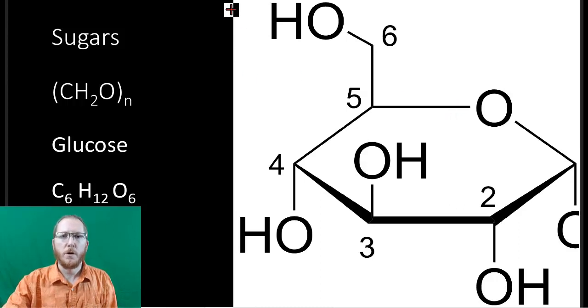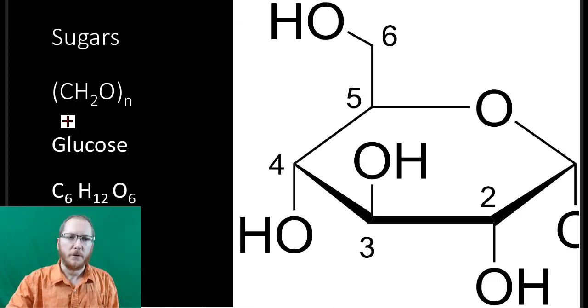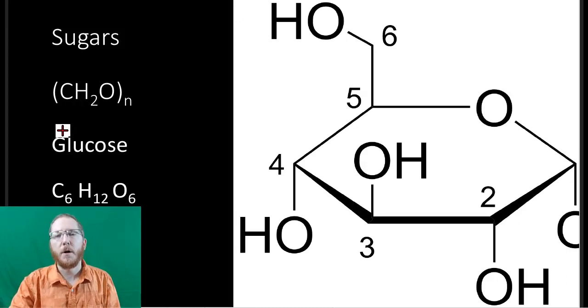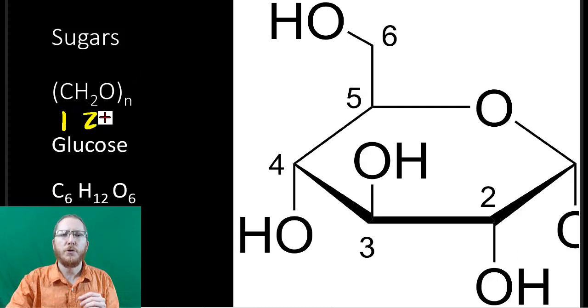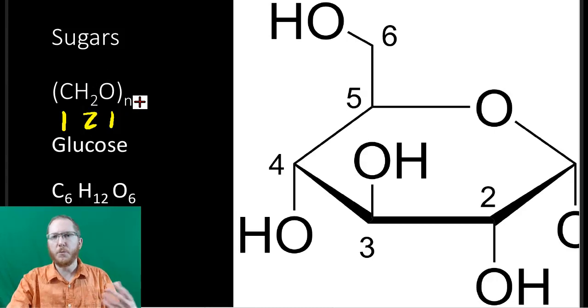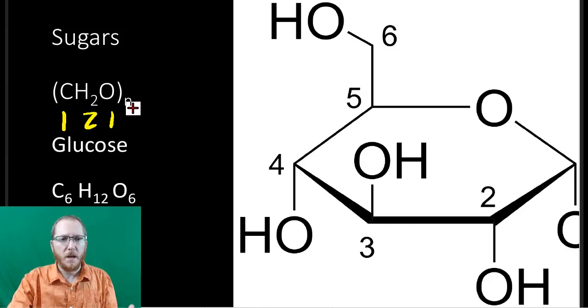This is going to show glucose off to the side here. Glucose is C6H12O6 as its chemical formula. You'll see that's kind of important because that's partly how we define carbohydrates. If you're thinking something's a carbohydrate, it always has a 1 to 2 to 1 ratio of carbon to hydrogen to oxygen. You'll see that often written as CH2O in parentheses with an N off to the side. In the case of glucose, obviously, it's 6, 12, and 6.